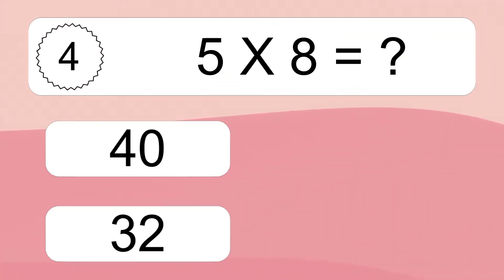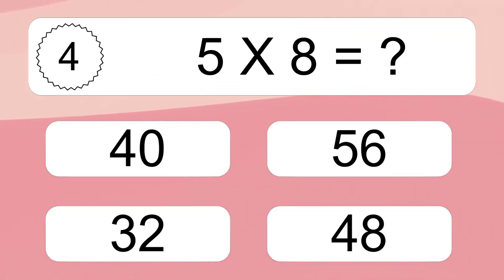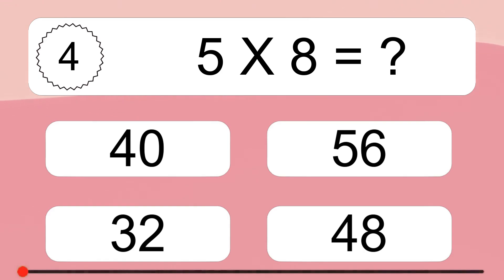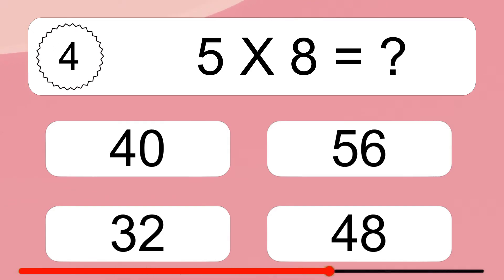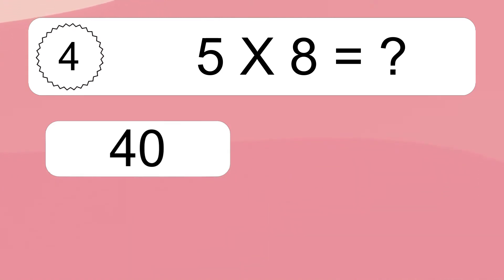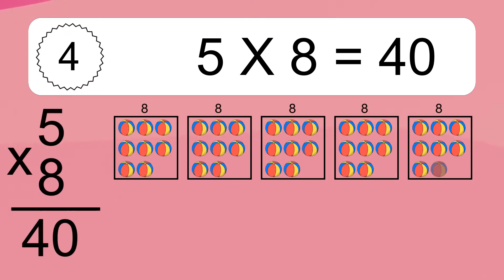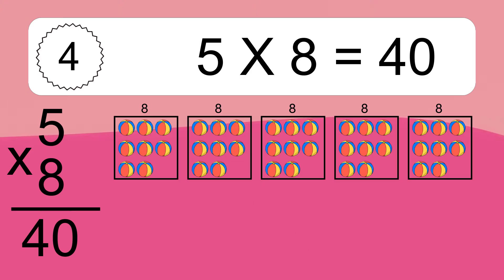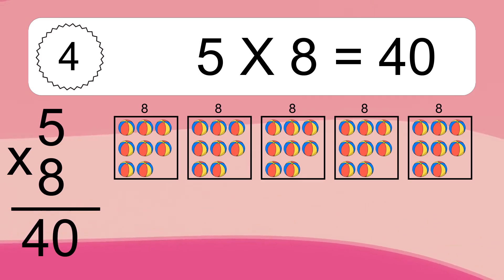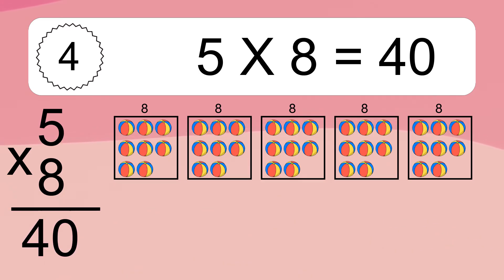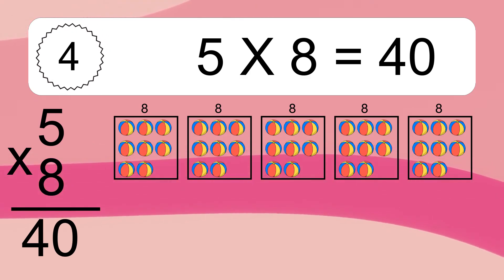5 times 8 equals 40. We have 5 boxes, and each box has 8 colorful balls inside. If you count all the balls in all the boxes together, you will have 5 times 8 balls. This equals 40 balls.